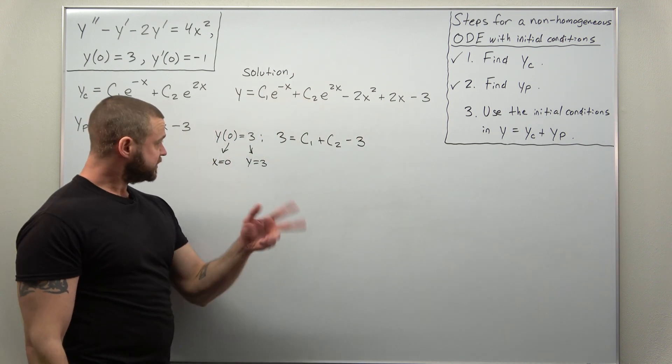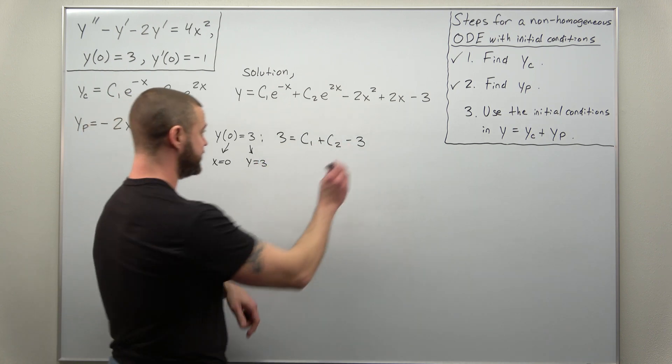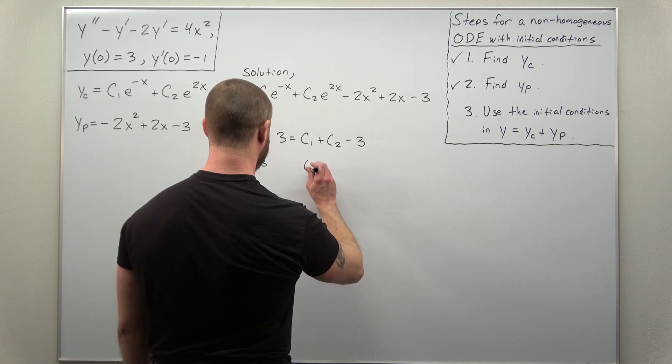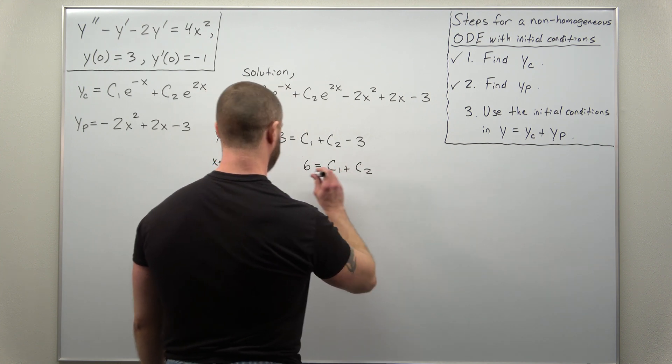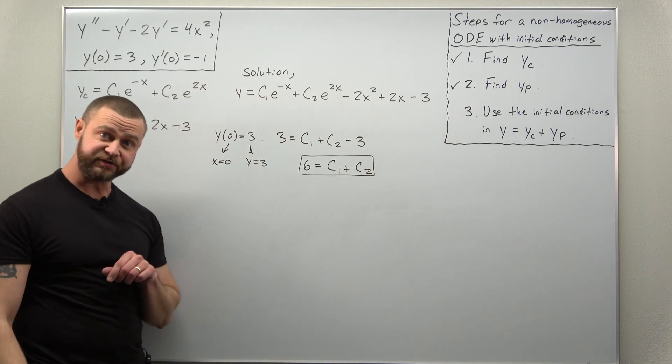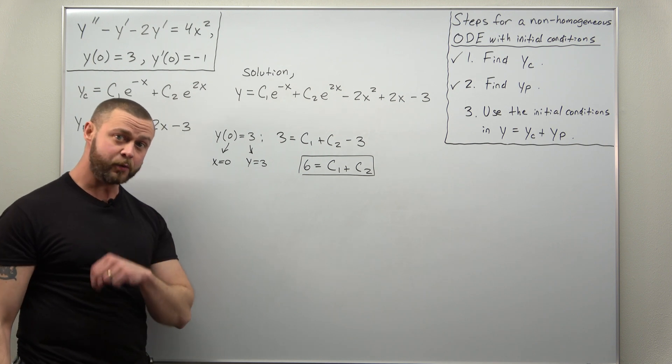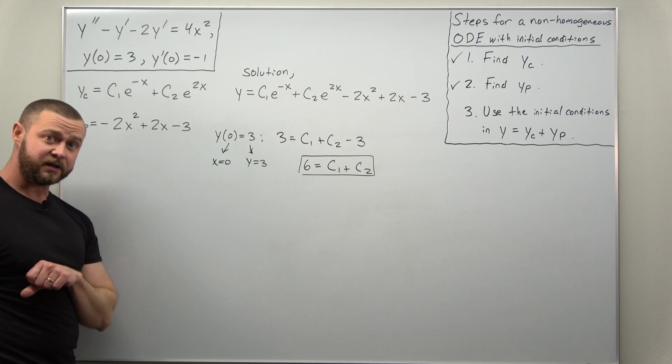All right. And we can simplify that a little bit. This is one equation. So we can add the three to the other side. It looks like we get six equals C1 plus C2. So that's one equation for two unknowns. That was making use of the function initial condition.